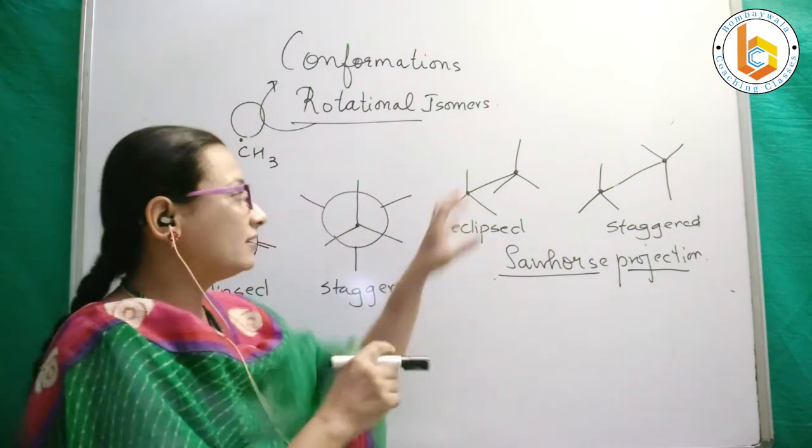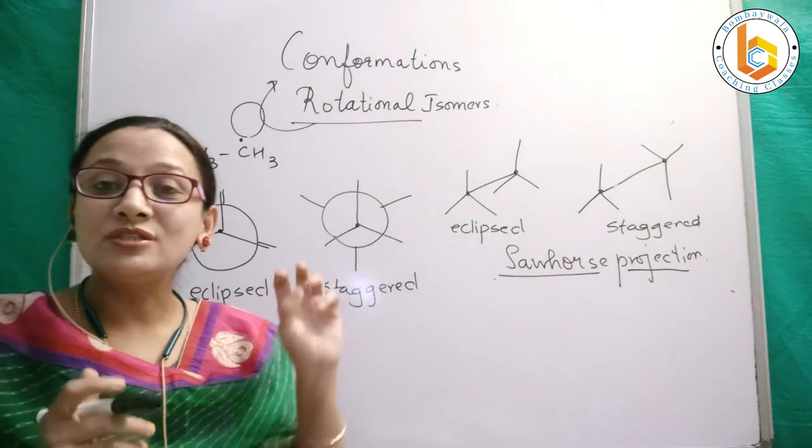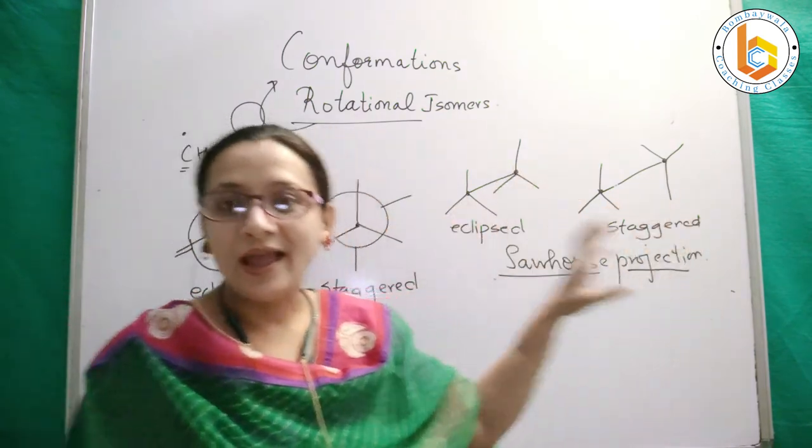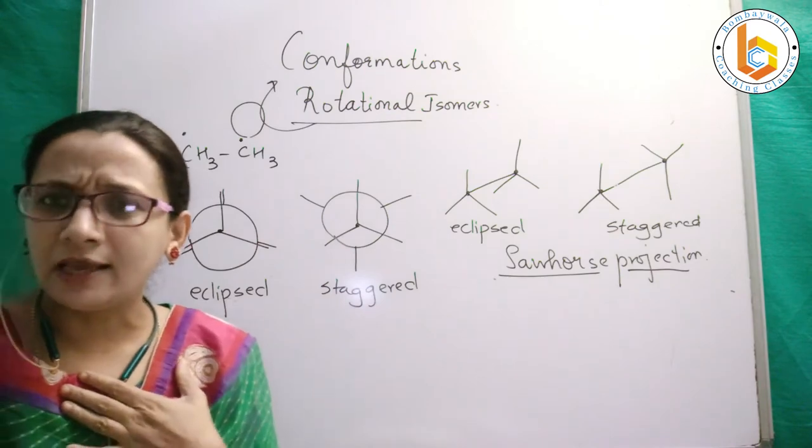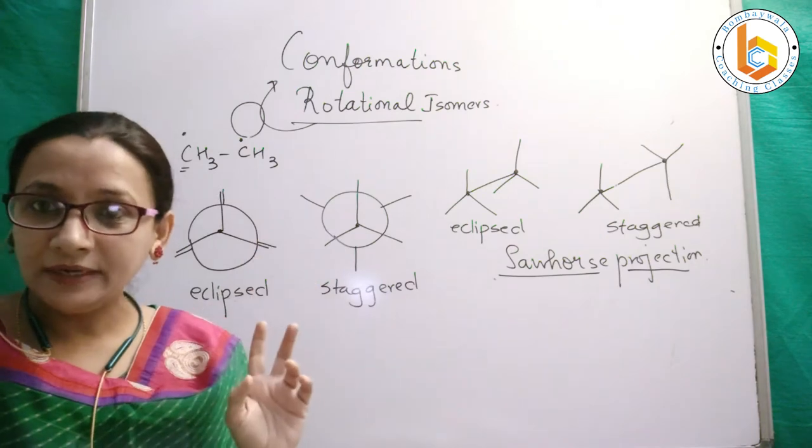This looks like a horse. So sawhorse tells you the structure looks like a horse, and Newman represents that it looks like a moon—this is just for us to remember.